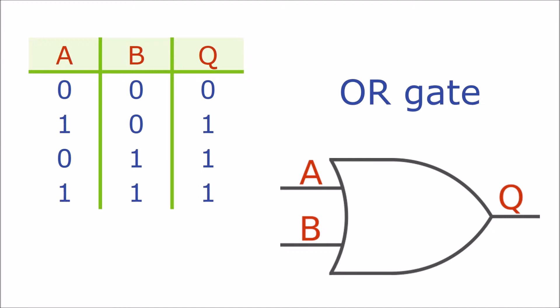The OR gate has a different symbol and different behavior. Its output is one if either A or B or both are set to one.